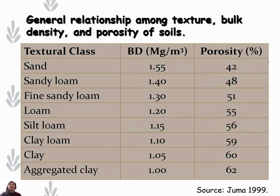For the final slide, this table illustrates the general relationship among soil texture, bulk density, and porosity. As soil texture becomes finer — from sand to clay — bulk density decreases from 1.55 down to about 1 megagram per cubic meter. Porosity increases as soil texture becomes finer, meaning fine-textured soils have greater porosity than coarse-textured ones.